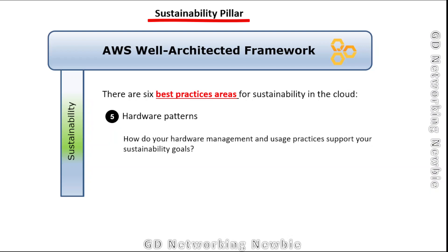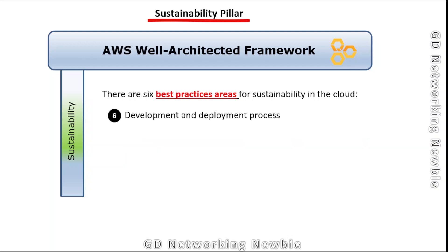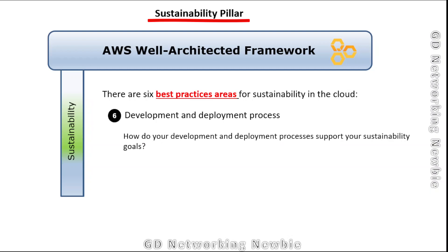For hardware patterns: how do your hardware management and usage practices support your sustainability goals? If there is newly introduced hardware in the market that can reduce energy consumption or improve energy efficiency, your architecture should be able to take benefit of that. For development and deployment processes, we can also find ways to minimize energy consumption during the development and deployment phases.